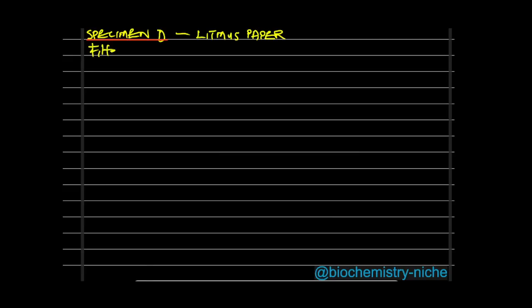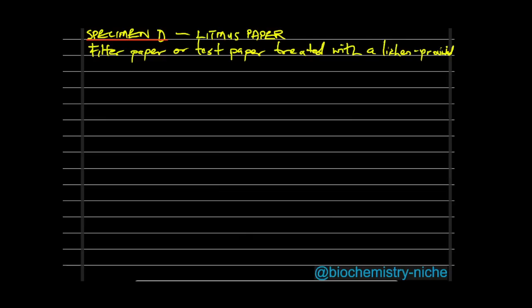Litmus paper is a filter paper treated with a leaching-provided natural soluble material. It produces results used as a pH indicator — a direct representation of the pH of the tested substance.